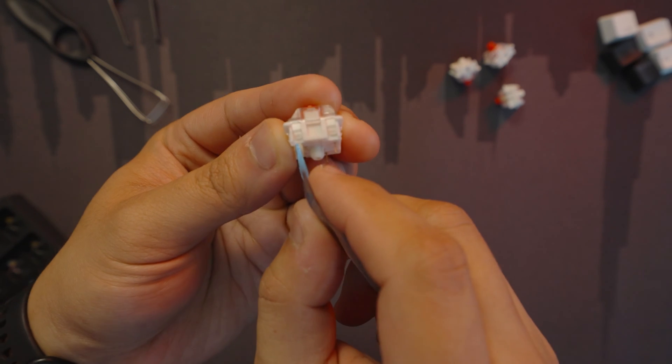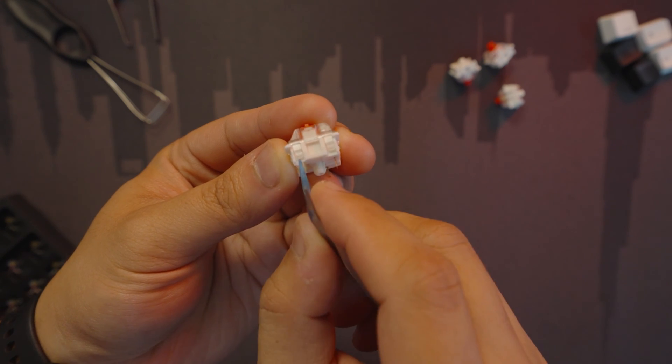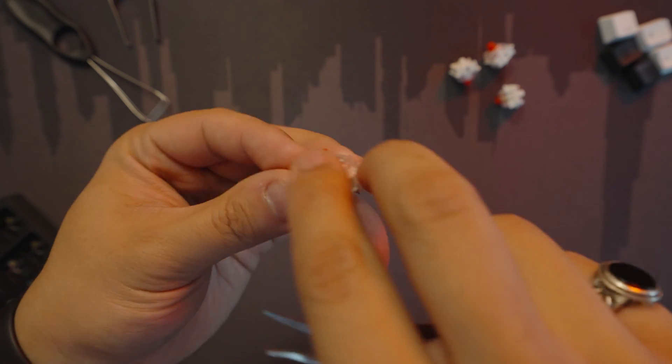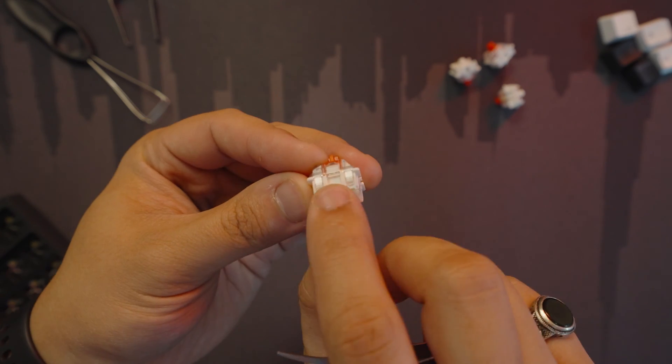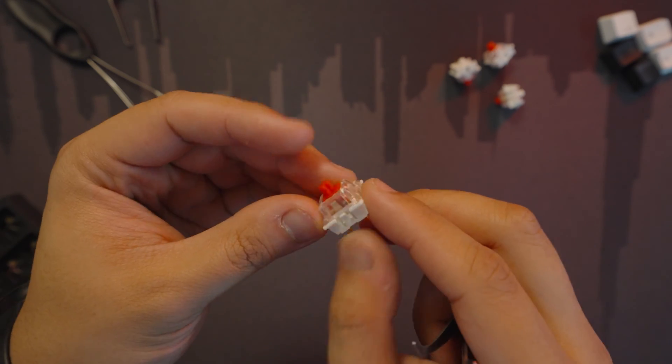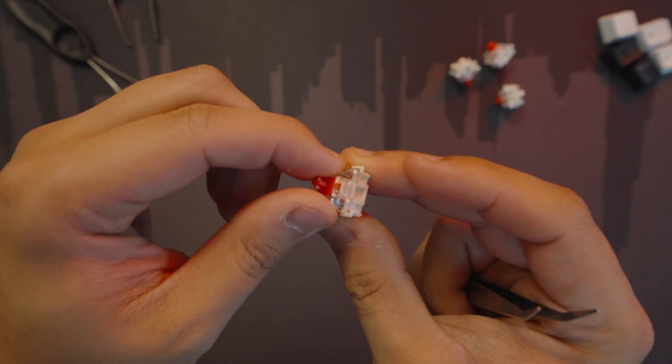As you can see here, there are two clamps on both sides of the switch, so there are four clamps total that are holding this top part of the switch.